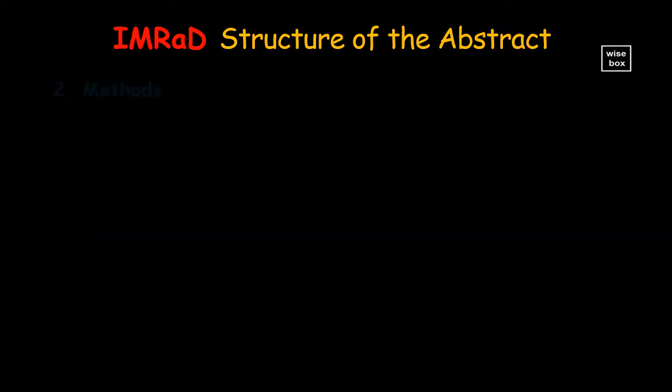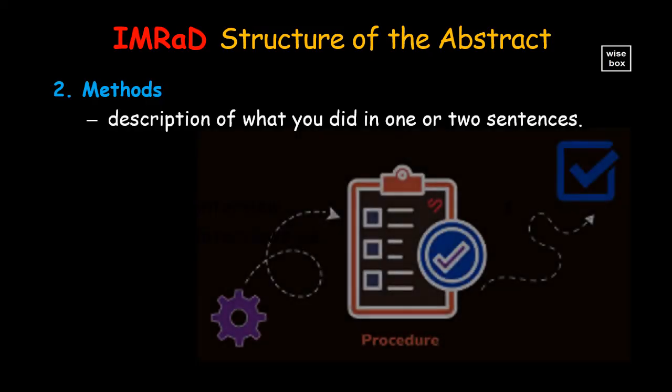Next, indicate the research methods that you use to answer your question. This part should be a straightforward description of what you did in one or two sentences. It is usually written in the past simple tense, as it refers to completed actions.